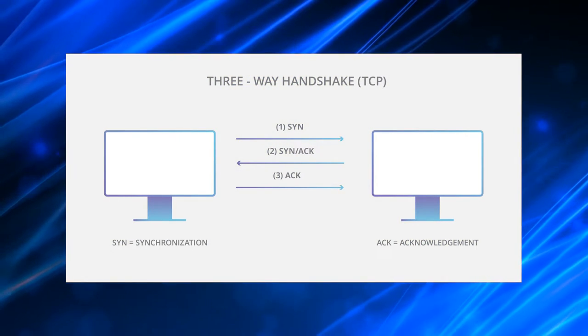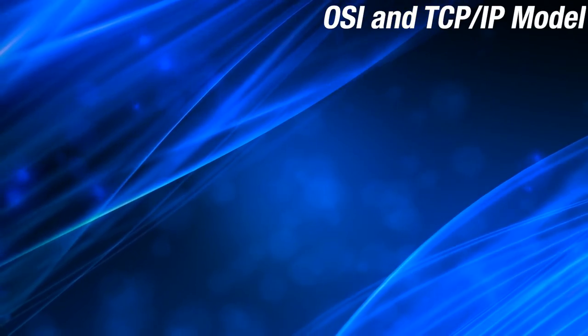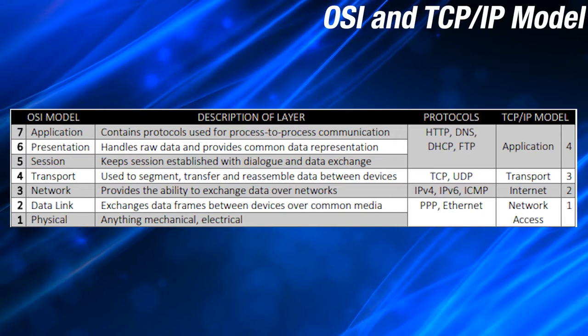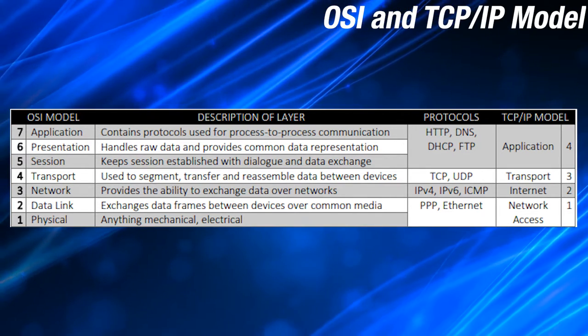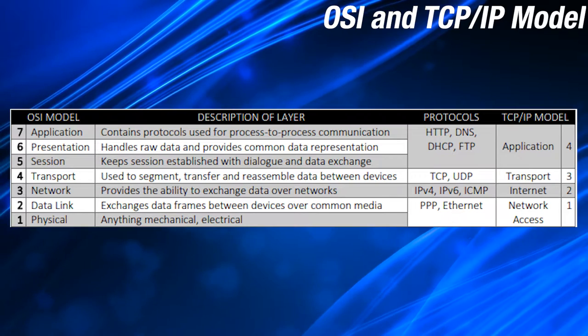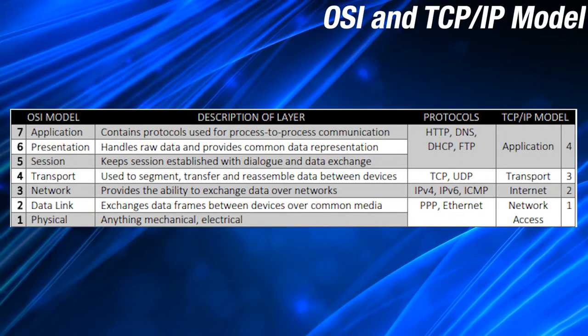In the transport layer, transmission control protocol is used for reliable transmission of messages. In the application layer, hypertext transfer protocol is the standard for communication for things around the web. The open systems intercommunication model is used to lay down the grounds for network communication to work. Another similar model is the TCP/IP model. In the TCP/IP model, the physical layer and the data link layer are combined into one layer called the network access layer.